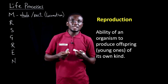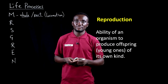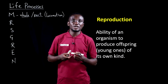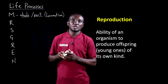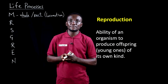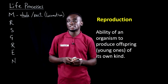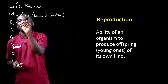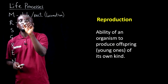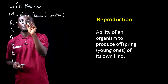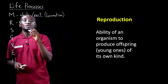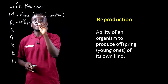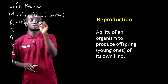The next one is reproduction, which is the ability of the organism to produce offspring or young ones of its own kind. The key word here is young ones or offspring, and the offspring should be of the animal's own kind.